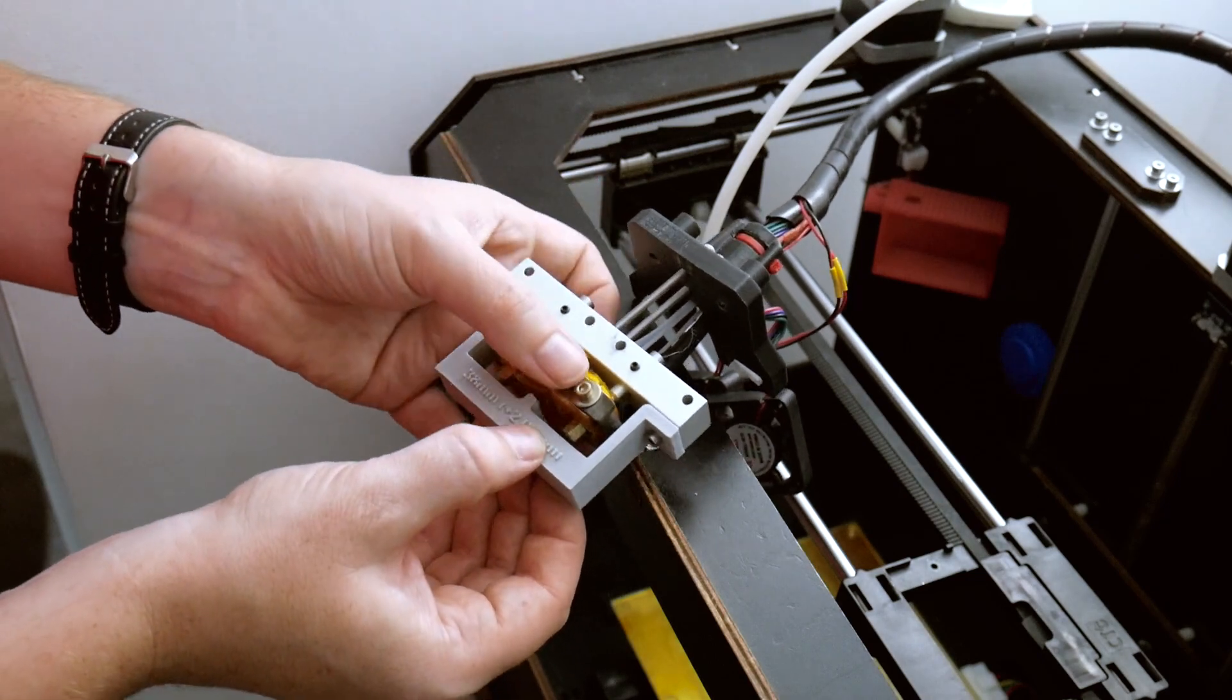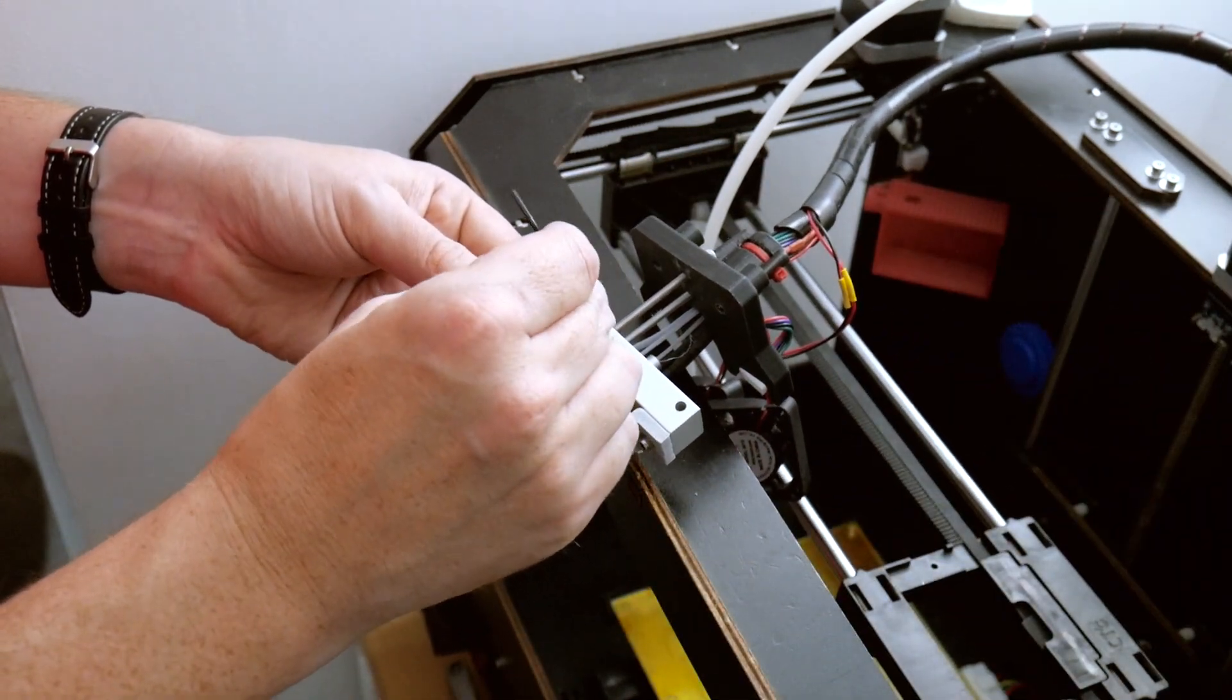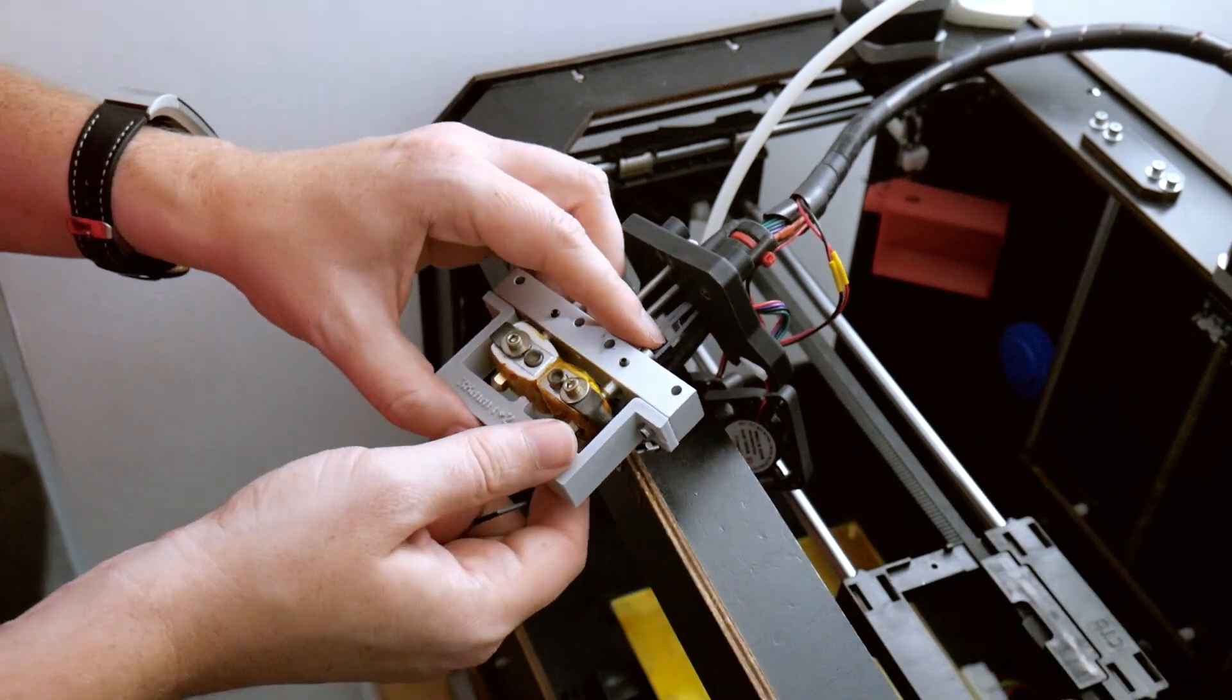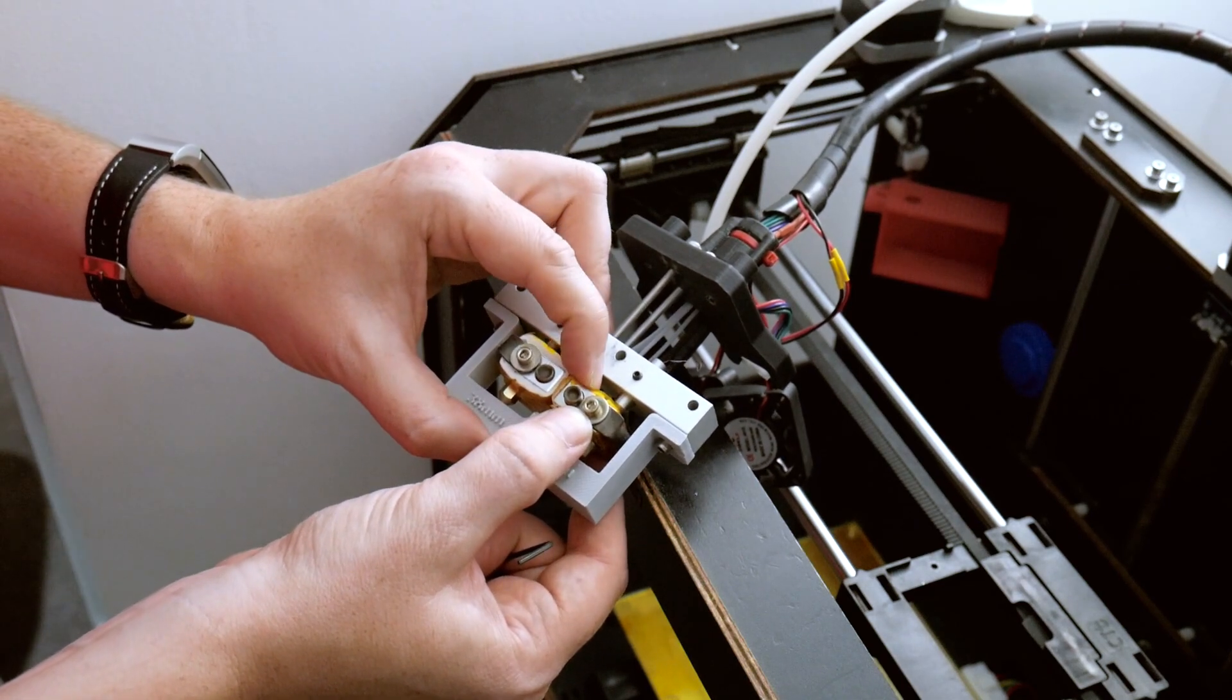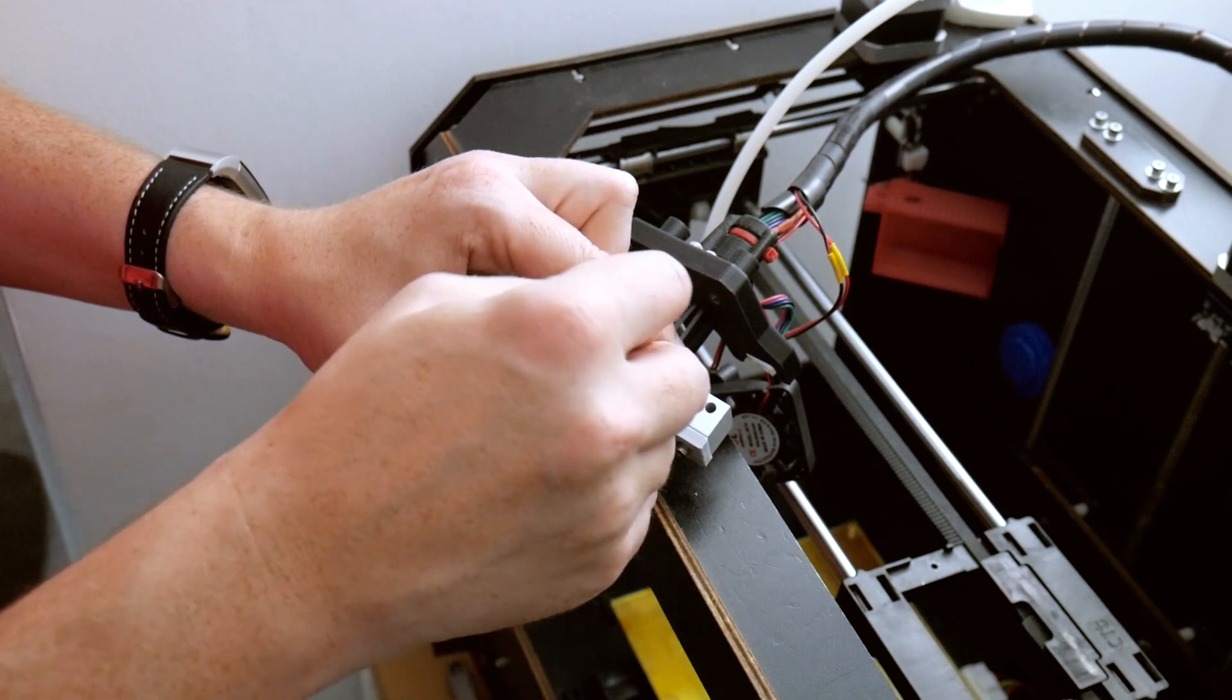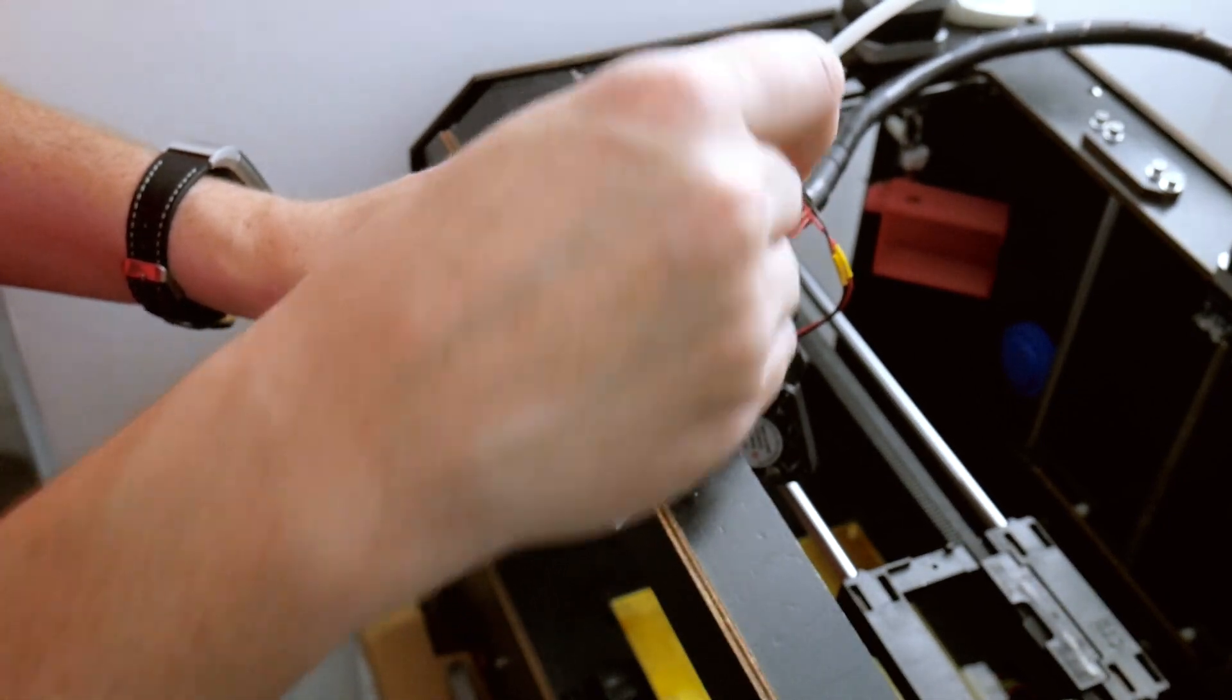As you can see we can move these up and down to position them where we need. This screw is a little bit too tight. There we go. What I like to do is square it up and just give it a little bit of firm pressure so it's touching the print bed. So it's touching the bottom of the print there. And then just tighten it up. And that's one done.